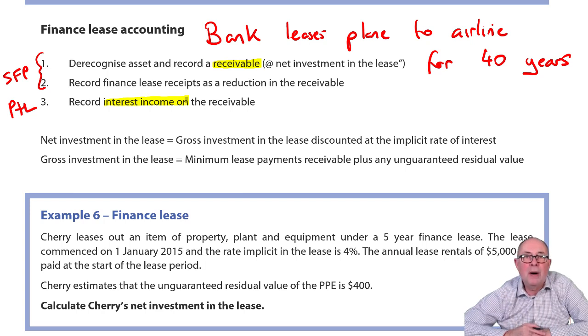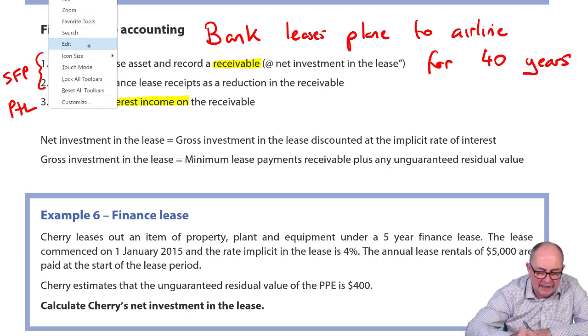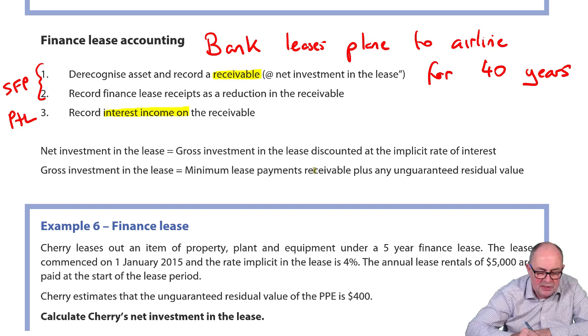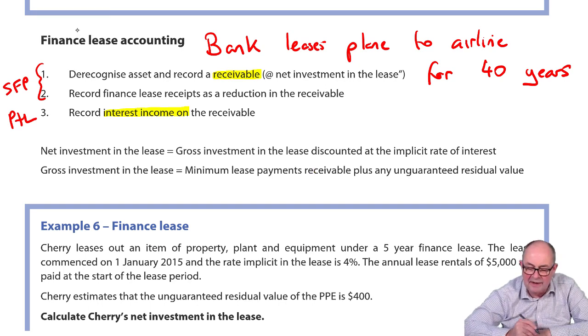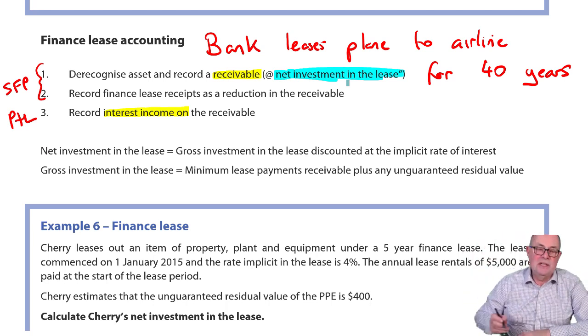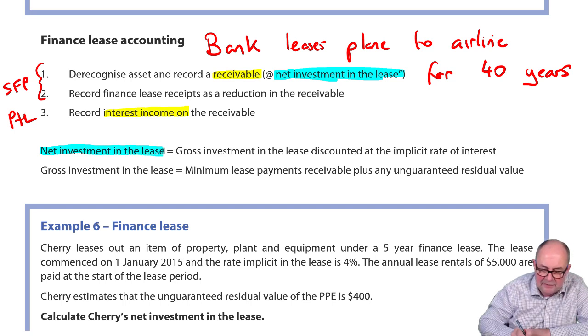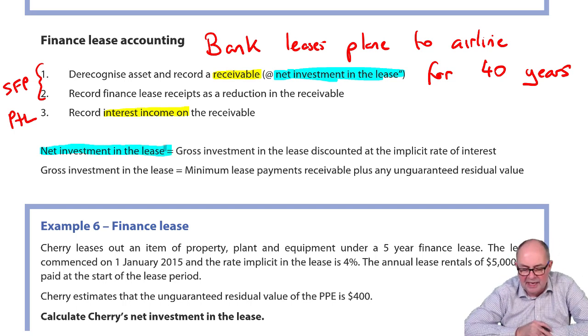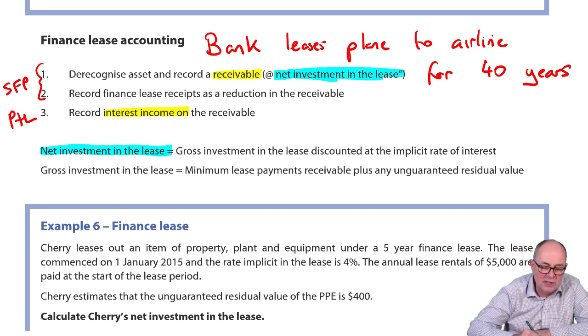It's possible that you might be asked to calculate the value of this opening receivable, which is a little bit messy. As you can see in the notes, the receivable is measured effectively at something that's known as the net investment in the lease. The net investment in the lease is defined below. The definition doesn't get us very far, though. It just says the gross investment discounted. Now, we'll be given the interest rate, so the discounting is not a problem. But what is the gross investment?